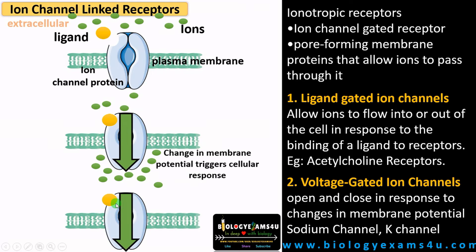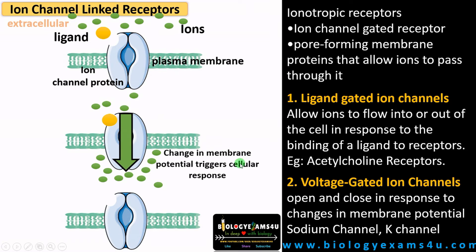Upon detachment of this ligand, the channel is closed. So ligand-gated ion channels are simply ion channels that allow the flow of ions through the ion channel protein in response to ligand binding. The second type is called voltage-gated ion channels.